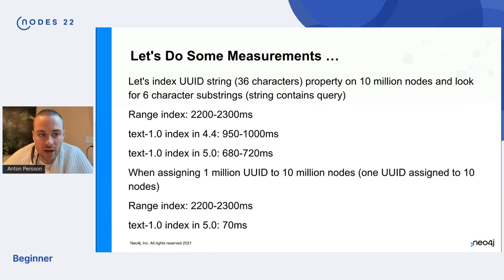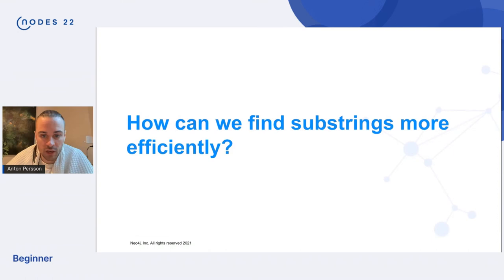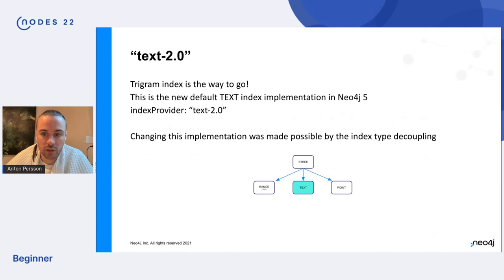Okay. So now we've kind of outlined the problems in Neo4j four four for the text index type. So let's talk about how can we find substrings more efficiently and tada. Here comes text-2.0. Very shiny and fancy name. So this one uses a trigram index under the hood. It is the default implementation for the text type in Neo4j 5. And you're recognized by the index provider text-2.0.